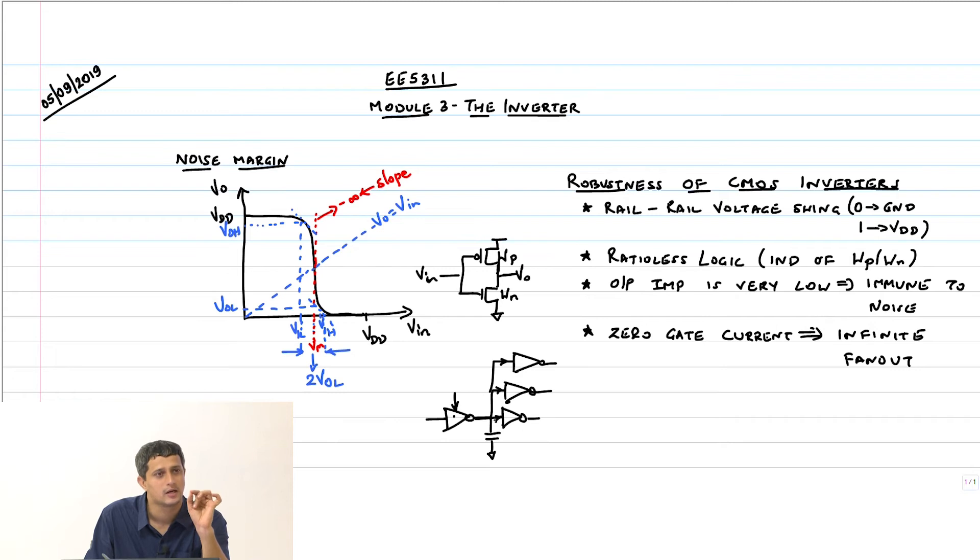Because this gate current is 0, why is the gate current 0? Because it is going to an insulator, the gate is an oxide silicon dioxide or hafnium oxide, and therefore that is like an insulator and it can tolerate 0 current.